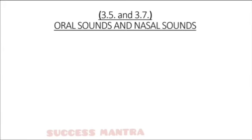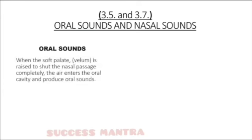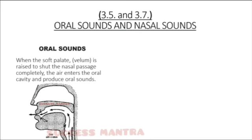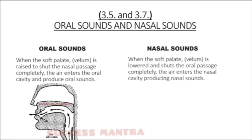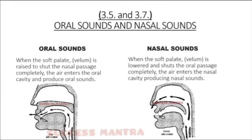Oral sounds are produced when air from the lungs comes out through the mouth. Nasal sounds are produced when air from the lungs comes out through the nasal passage — that is, your nose. In the diagrams, the first image shows arrow marks depicting airflow through the mouth, while in nasal sounds the arrow mark comes out through the nasal passage.